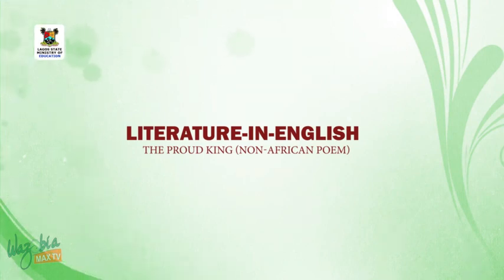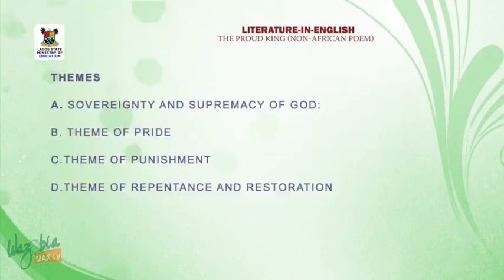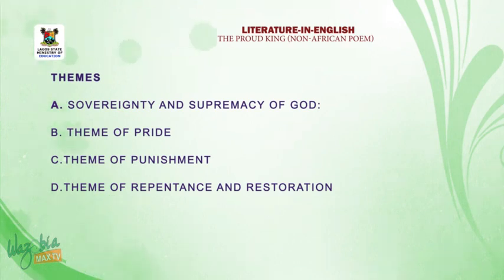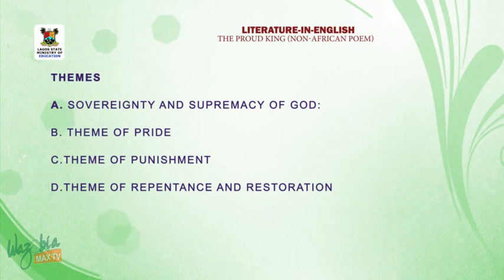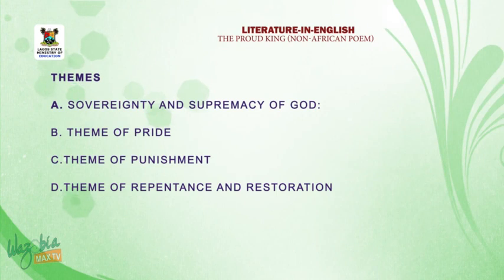Welcome back, students. We want to treat the themes of The Proud King by William Morris. We have different themes, but the popular ones are: one, sovereignty and supremacy of God; two, the theme of pride; three, the theme of punishment; and four, the theme of repentance and restoration.